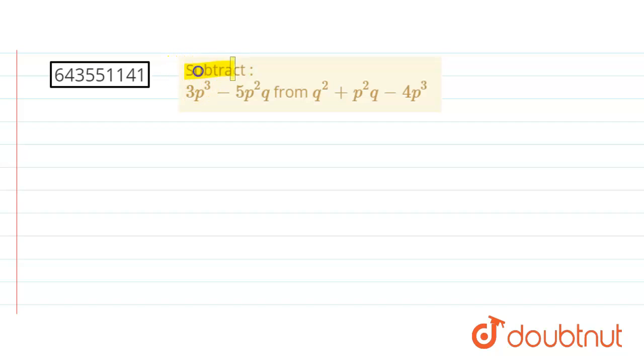Hello student, now here we have to subtract this 3pq minus 5p2q from this second algebraic expression. This is q2 plus p2q minus 4pq. So just consider that subtraction. This is q2 plus p2q minus 4pq. This minus 3pq minus 5p2q.